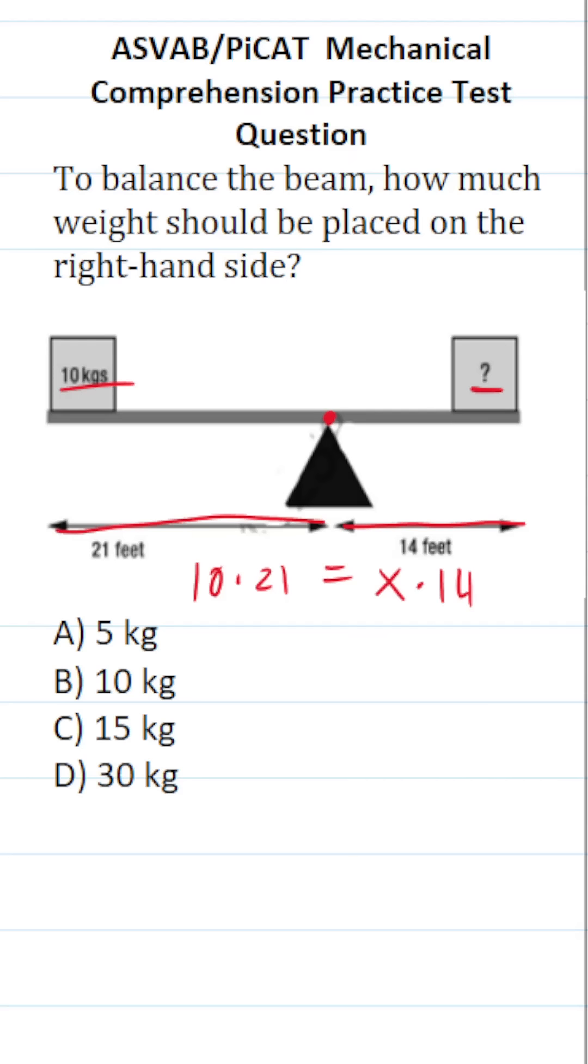All we have to do is solve this equation for x. We could do 10 times 21 as our next step. 10 times 21 is 210, equals 14x. To get x by itself, we just divide both sides by 14. This crosses out, leaving you with x on this side.